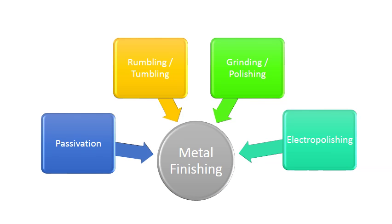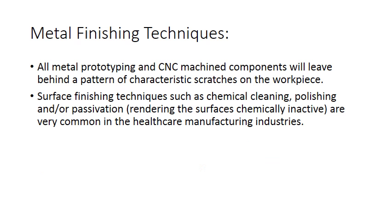Different types of finishes are done to metals: they can be passivated to prevent corrosion; rumbling and tumbling is a way of removing rough edges; grinding and polishing similarly remove unwanted edges and achieve a nice surface finish; and electropolishing achieves a very high surface finish. Surface finishing techniques such as chemical cleaning, polishing, and passivation are very common and mandatory in healthcare manufacturing industries for successful outcomes of medical devices.